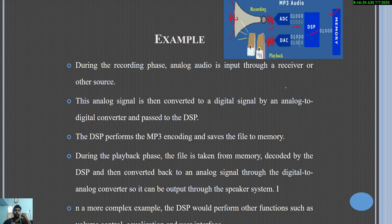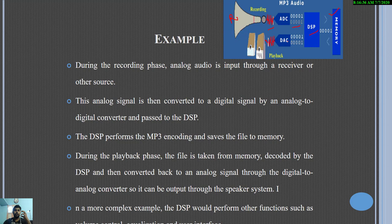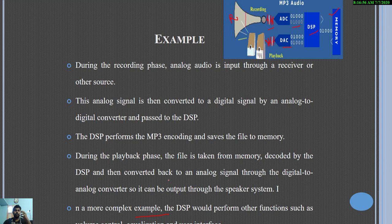It is digitized and sent to the appropriate output. For example, it can be an audio signal such as MP3, where it can be encoded and then decoded, and further sent to the DSP. Through the DSP it reaches the digital to analog converter (DAC), and then it is given to the speaker for playback. In a more complex example, the DSP would perform other functions such as volume control, equalization, and user interface.